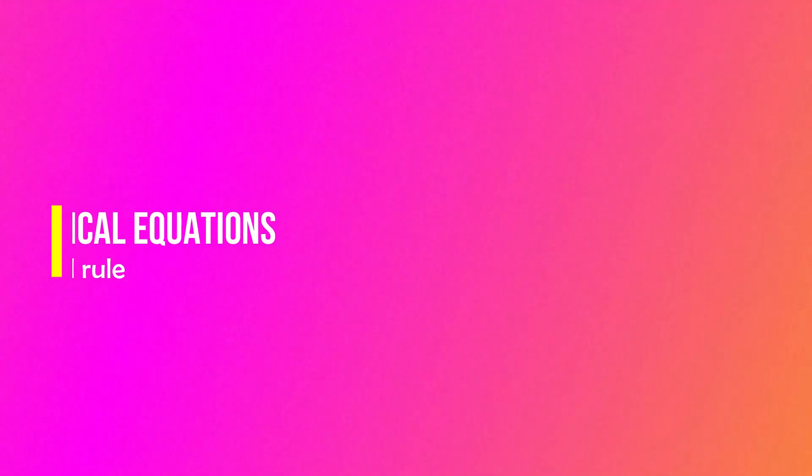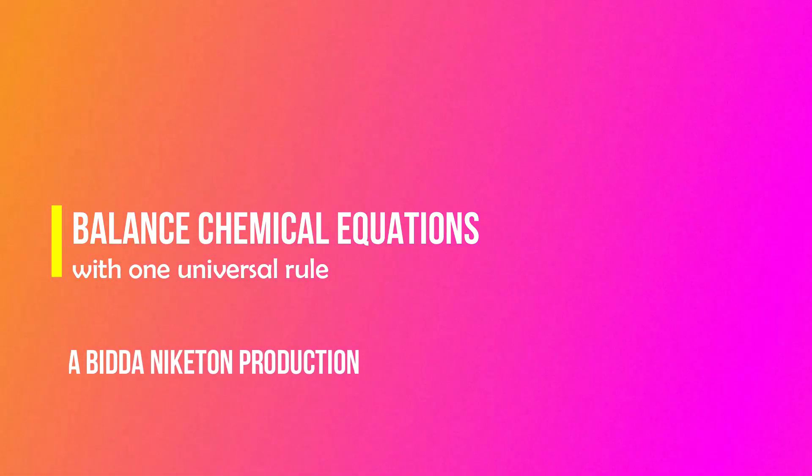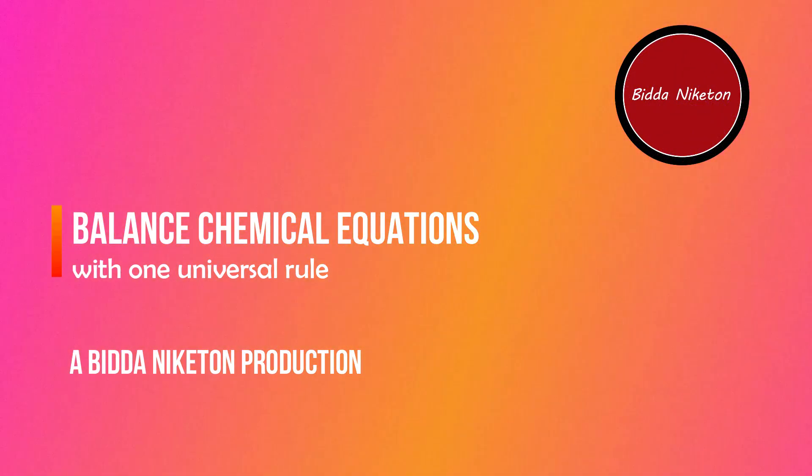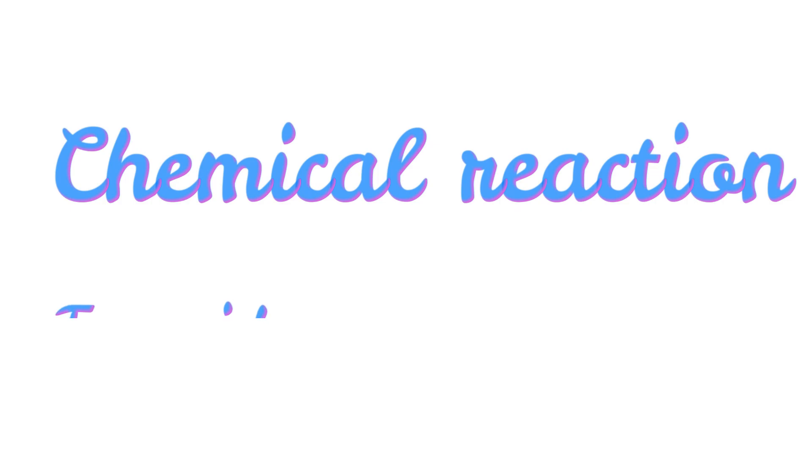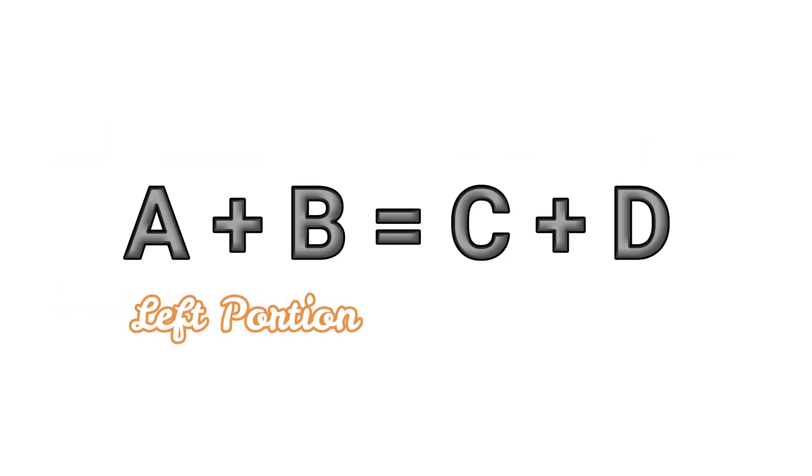From secondary school we've been introduced to chemical equations, but balancing that equation was always scary. Today let's try to tame the ghost of balancing equations. Every chemical reaction has two sides: the left portion of the equal sign is called reactants and the right portion is known as products.